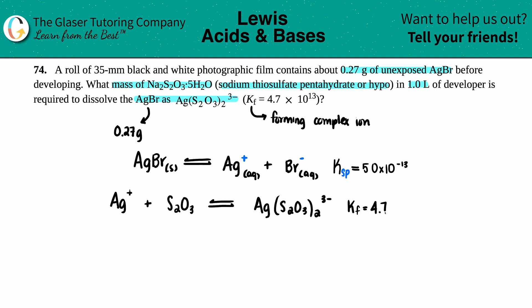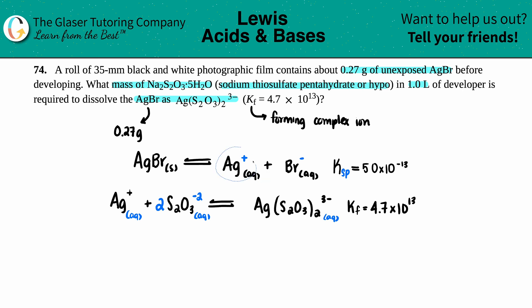Kf is 4.7 times 10 to the 13th. For the charge on S₂O₃: we have two of them, and we need an overall charge of -3. We have +1 from Ag⁺, so the two S₂O₃ groups must contribute -4 total, meaning each S₂O₃ carries a -2 charge. Both species are aqueous, as is the complex ion. These are two independent equations happening in the same solution.